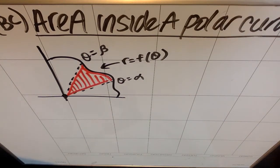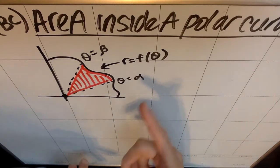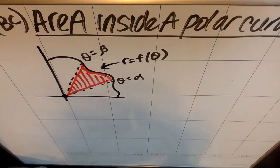Intro to BC topic, which is the area inside a polar curve. I've made up this fake polar curve where R is a function of theta, and I want to find this red area from the angle theta equals some alpha to some theta that equals beta.